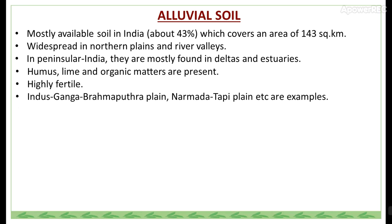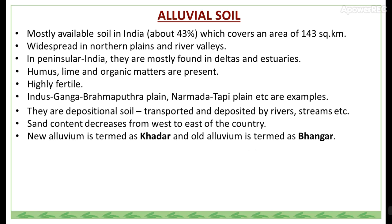Alluvial soil is found in the Indus, Ganga, Brahmaputra plains and Narmada, Tapti plains, etc. These are depositional soils, transported and deposited by rivers and streams. Sand content decreases from west to east of the country. New alluvium is termed Khadar and old alluvium is termed Bhangar.